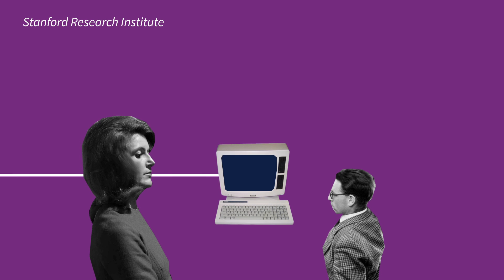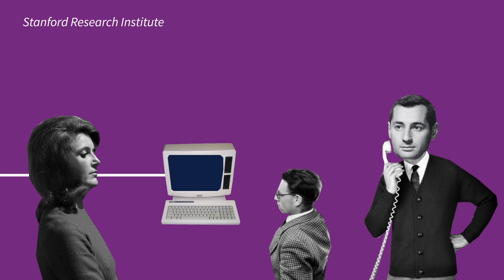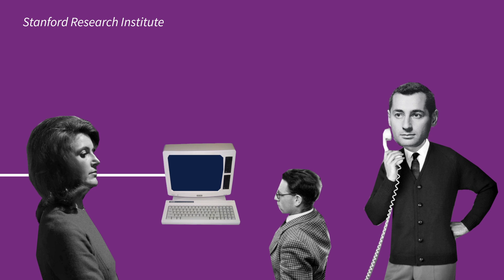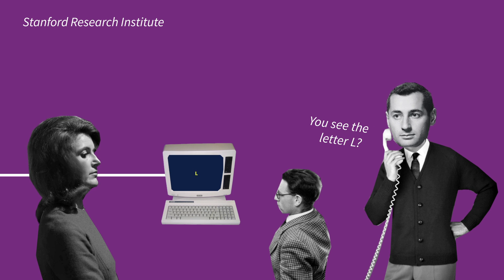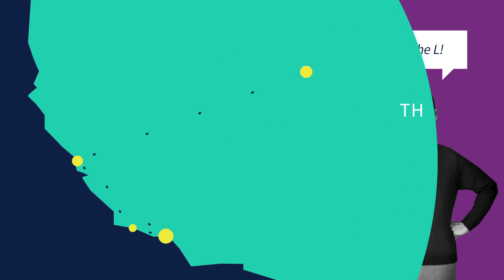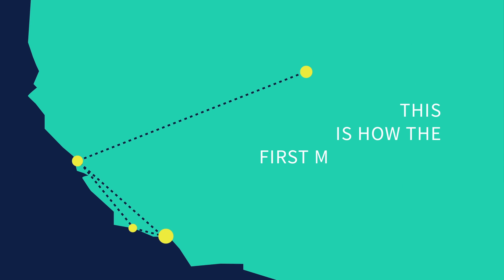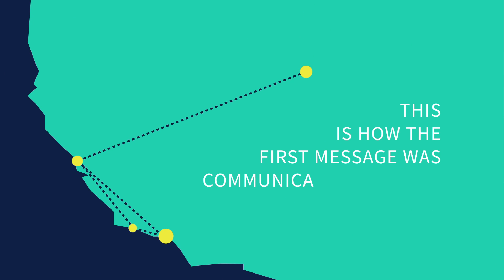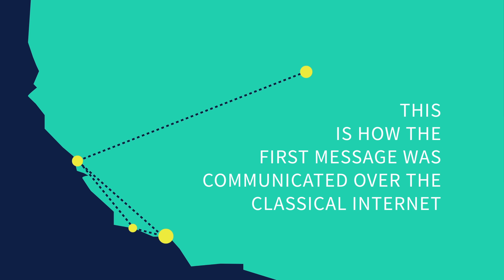The year is 1969. It's late at night and a group of people at the Stanford Research Institute are gathered around a monitor. Then the phone rings. The voice on the other side asks if they can see the letter L on the screen. Yes, we see the L! This is how the first message was communicated over the classical internet.